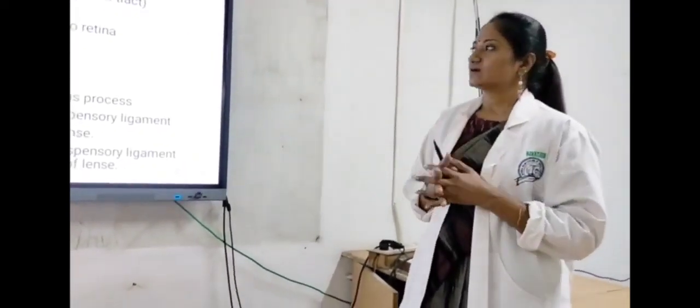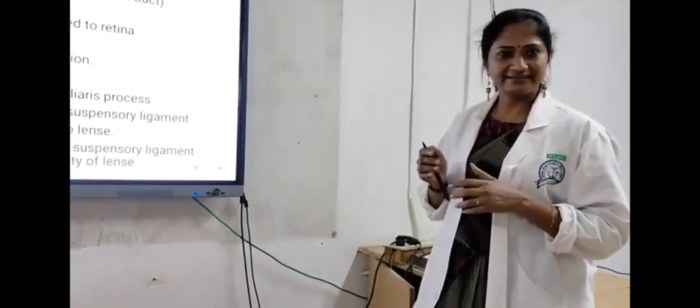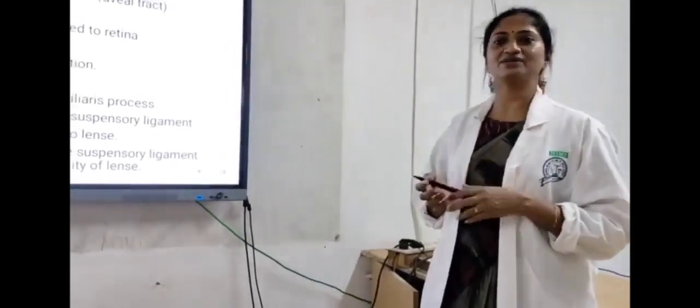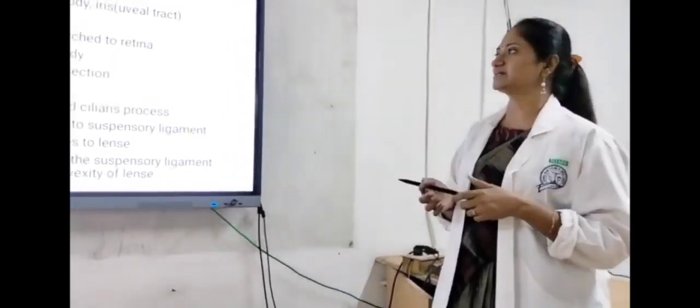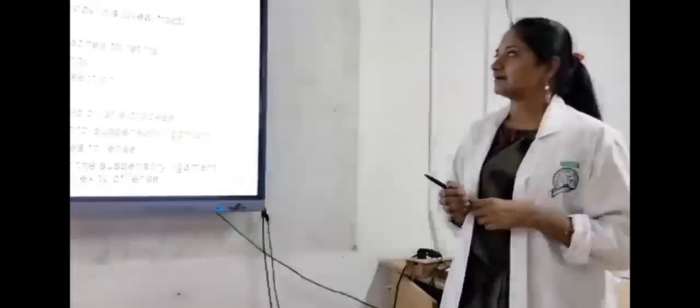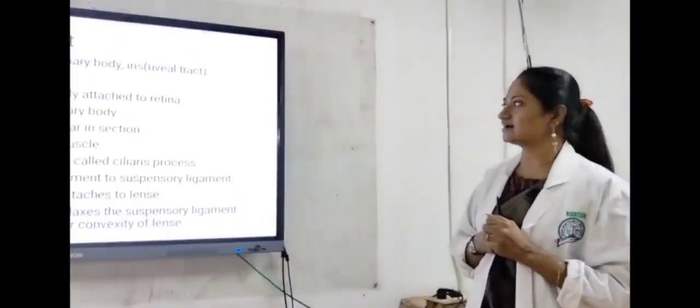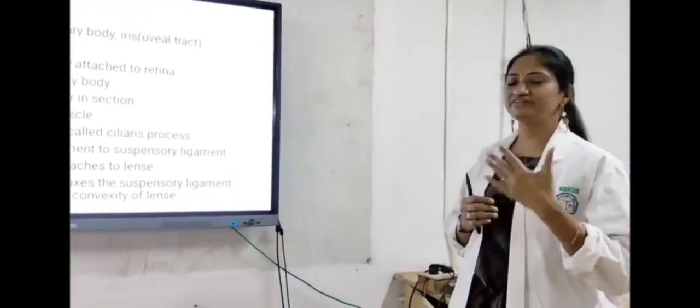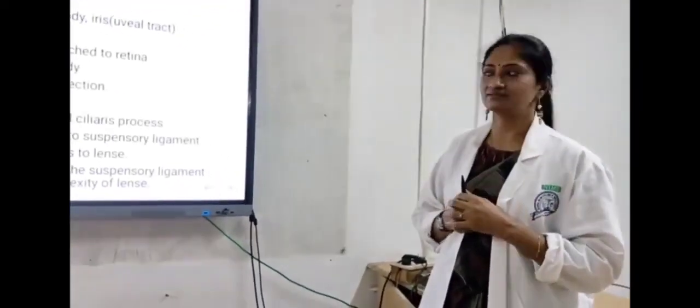Choroid is a thin layer which is highly vascular and pigmented, which is loosely attached to the sclera and firmly attached to the retina.